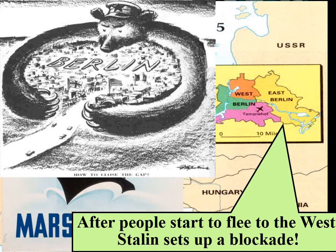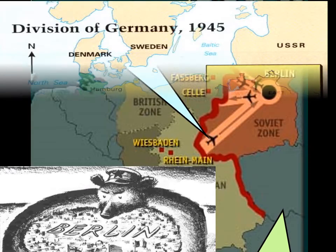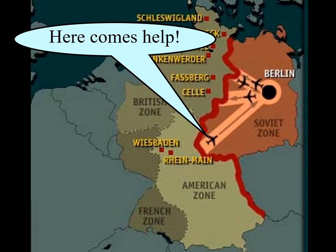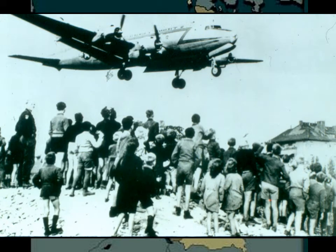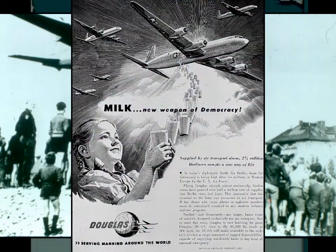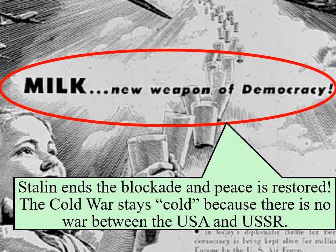West Berlin is completely surrounded — on its eastern side is East Berlin, a communist Soviet government, and all around it is East Germany, an entire communist block. So how is America going to get supplies to these people? Are we going to bomb them, bring in a big army, do a mass invasion? The answer is no. We fly in airplanes. We provide humanitarian aid — dropping food, bread, meat, other supplies, even milk. We drop Hershey's chocolate over Berlin. The blockade ends after a couple of months, things level out in Europe, no war breaks out, and the Cold War stays cold.